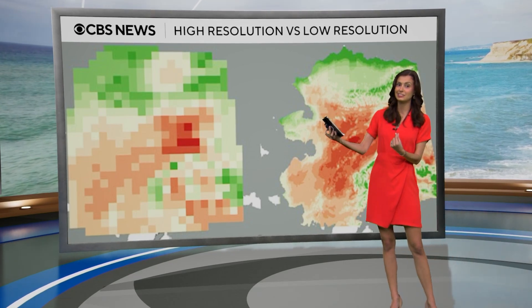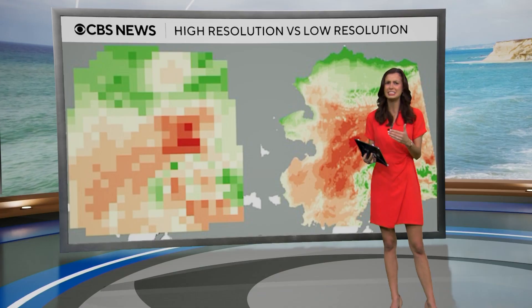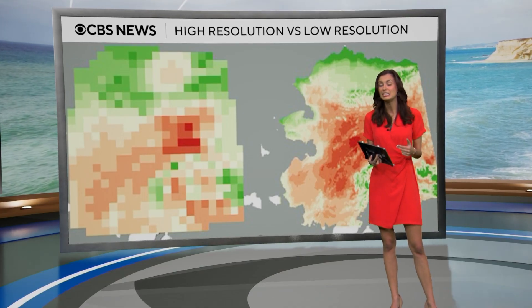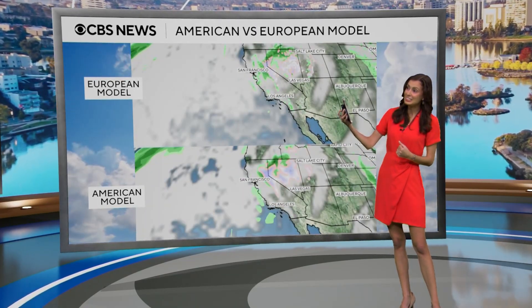The larger grid boxes show you a rough outline of what's going on, but they don't exactly show you what's happening. So the European model uses smaller grid boxes and therefore has a higher resolution. Here's an example: this was a storm that impacted us in California earlier this year, and you can see the European model is definitely a lot more detailed than the American model.